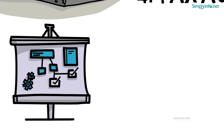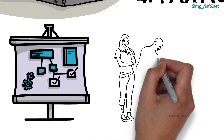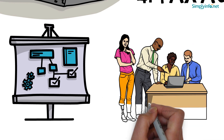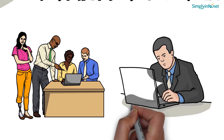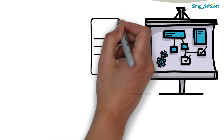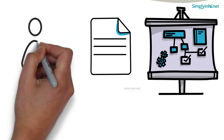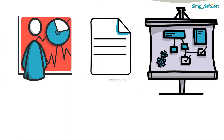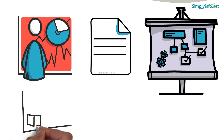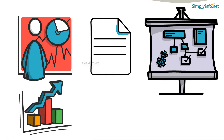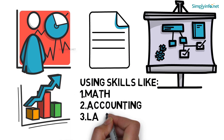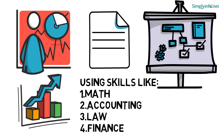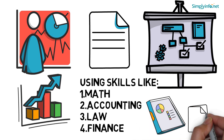Accountants can either be employed with an accounting firm or a large company with an internal auditing department, or set up an individual practice. They use numbers and financial statements to get a picture of the health of an organization, company, or individual, and how the company is performing over a period of time, using their skills in math, accounting, law, and finance. This information forms the basis of a company's reports and legal filing reports.